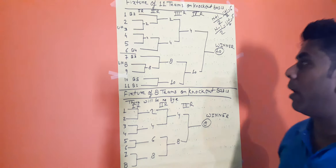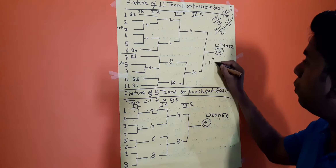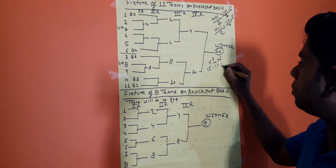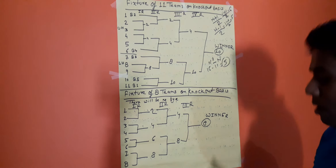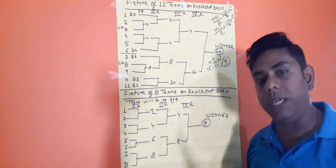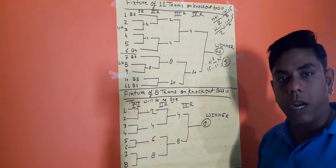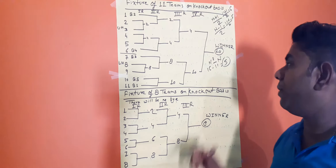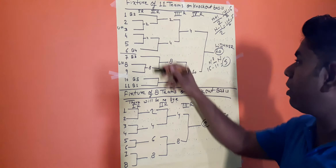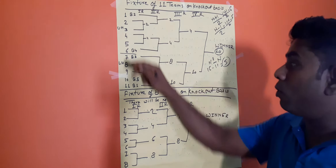First, we will give the byes. The number of byes is calculated as: next power of 2 minus total number of teams. So, 16 minus 11 equals 5 — total number of byes is 5. We have to give only 5 byes in this tournament, meaning 5 teams will get a bye in the first round of matches.